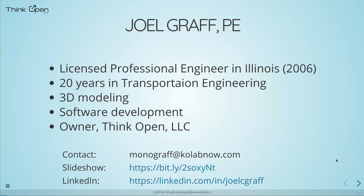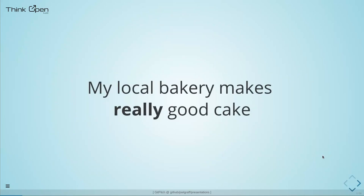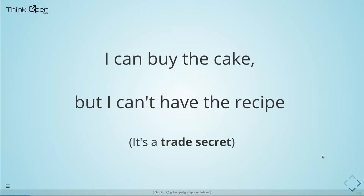When we talk about engineering and open source I need to use an analogy to introduce the idea, because I can't assume everyone is familiar with open source. Let's say I like coffee cake with nuts but I don't bake. In my town there's a local bakery that makes really good cake, so I can go buy that cake, eat it, love it, and tell everybody how great it is — but no matter how much I adore it I can never have the recipe, because it's a trade secret.